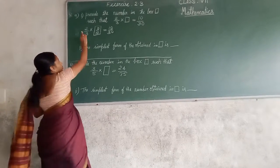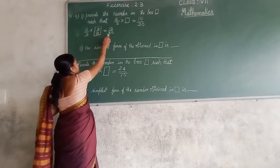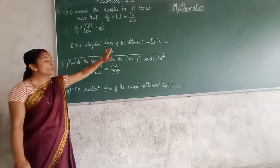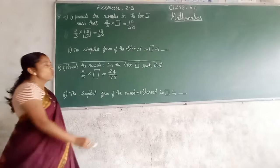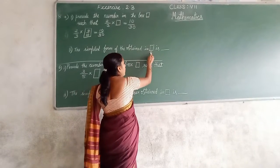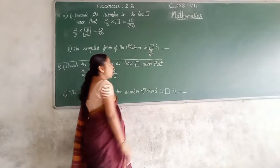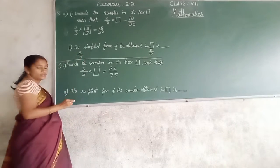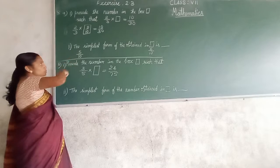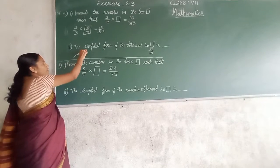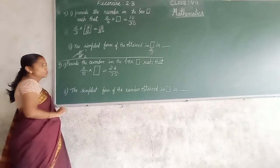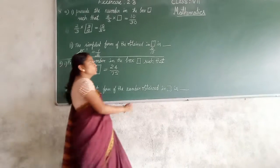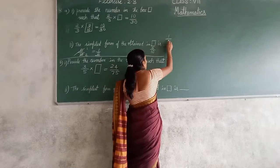You can cross-check it: 2 times 5 are 10, 3 times 10 are 30. So you are right. Now they ask for the simplest form of the number obtained in the box. We have obtained 5 upon 10. The simplest form: 5 divided by 5 is 1, 10 divided by 5 is 2. So you are going to get the simplest form as 1 upon 2.